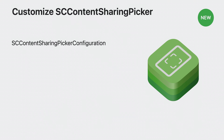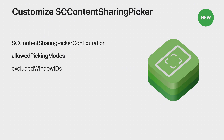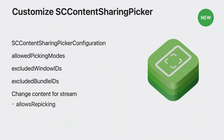SCContentSharingPicker also comes with methods that allow you to customize how the system is going to behave on a per-stream level. The SCContentSharingPickerConfiguration allows for several customizations. Allowed picking modes tells the system which picking modes are allowed — between windows, applications, and display selection for content filters. It also allows for the explicit declaration of excluded window IDs and bundle IDs that are not allowed to be picked. If you have a stream that you don't want people to change, the configuration has a property that can enforce that feature.